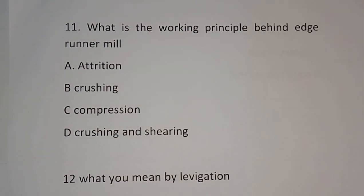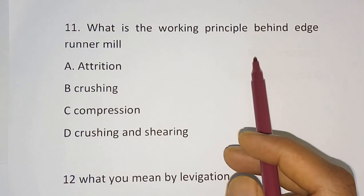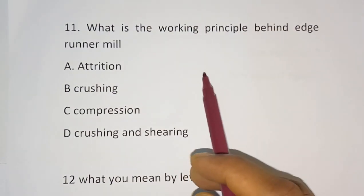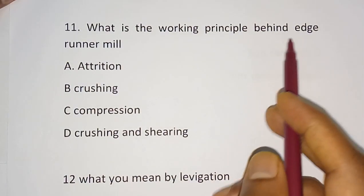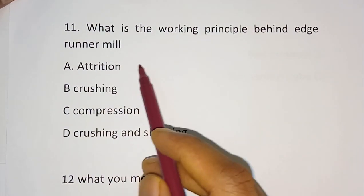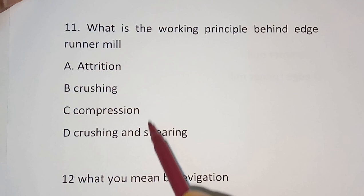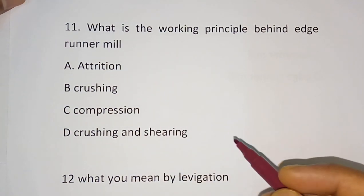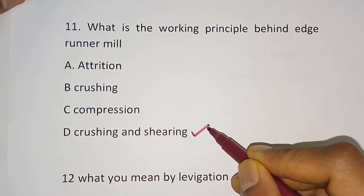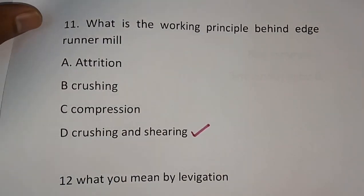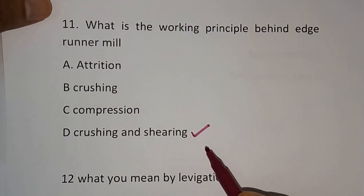Question number 11: What is the working principle behind the edge runner mill? Options are: attrition, crushing, compression, crushing and shearing. The correct answer is Option D — crushing and shearing. The working principle behind the edge runner mill is crushing and shearing.